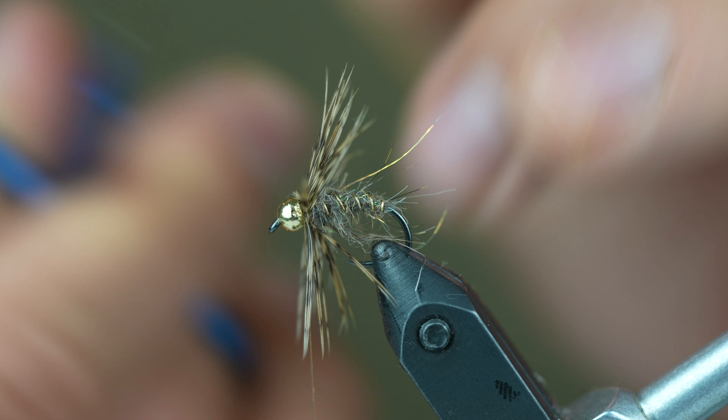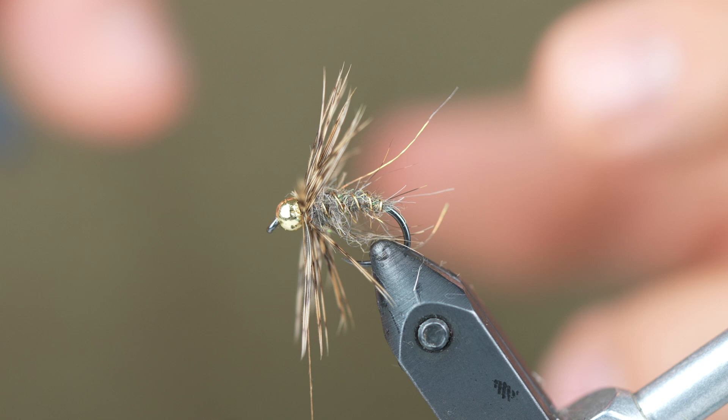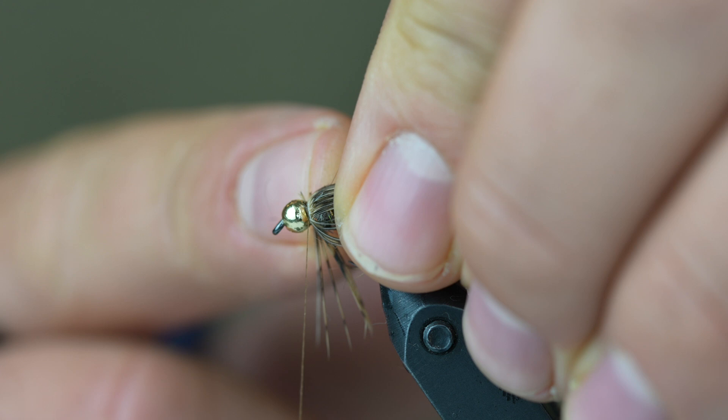So here's why we use that thorax, especially on brittle feathers like partridge. They tend to fall apart very quickly if you don't reinforce that center stem of the feather somehow. That can get broken very easily by the teeth of trout or it just seems like it always breaks. So you can see in the center of the fly the lighter center stem of the feather.